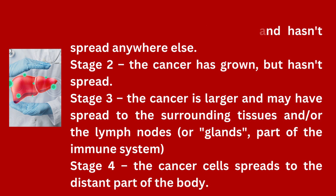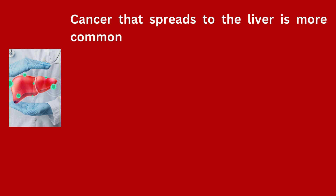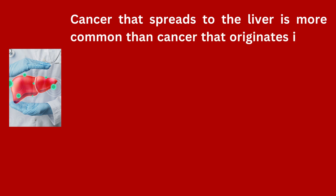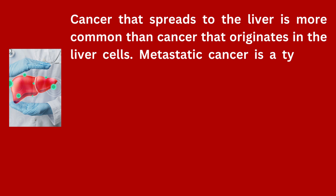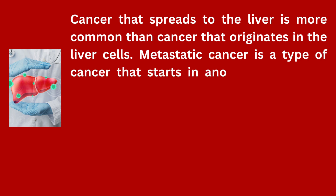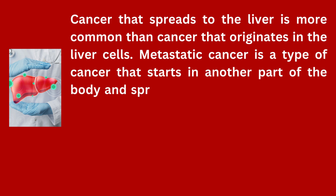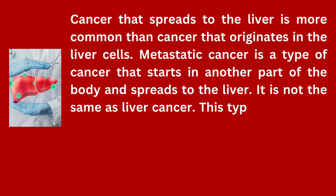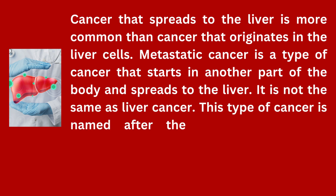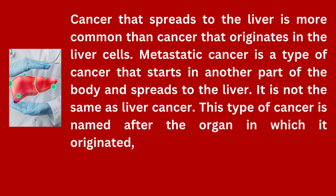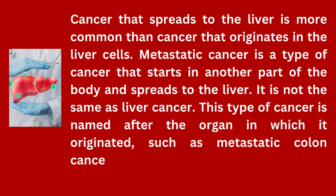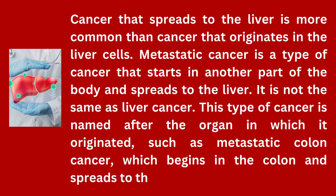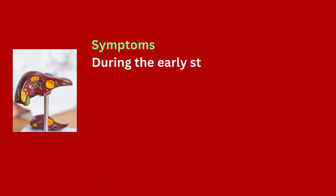Stage 4 — the cancer cells spread to a distant part of the body. Cancer that spreads to the liver is more common than cancer that originates in the liver cells. Metastatic cancer is a type of cancer that starts in another part of the body and spreads to the liver. It is not the same as liver cancer, and is named after the organ in which it originated — such as metastatic colon cancer, which begins in the colon and spreads to the liver.